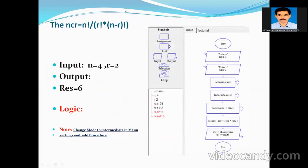My intention is to find nCr — this is combinations — we need to choose r objects from n objects. The formula is n factorial divided by r factorial into n minus r factorial. This is the simple mathematical formula, and its equivalent program is: fact(n) divided by fact(r) into fact(n minus r). So I am calling this fact function three times by passing different arguments — first time n, second time r, third time n minus r.